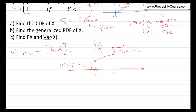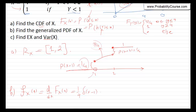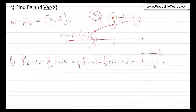Now if we take the derivative of the CDF, we find the PDF of X. As I mentioned, this is not mathematically rigorous but it is very useful for analysis. So the PDF f_X(x) is: (1/4) delta(x minus 1), plus (1/2) delta(x minus 2), plus the derivative of the continuous part, which is 1/4 from 1 to 2. I call this continuous part g of x, so g(x) equals 1/4 for x between 1 and 2, and 0 otherwise.